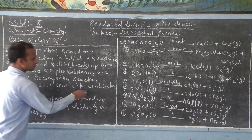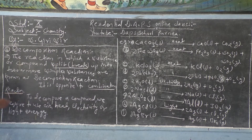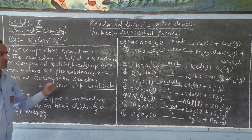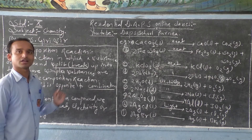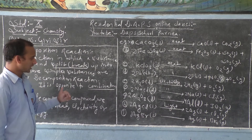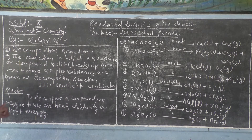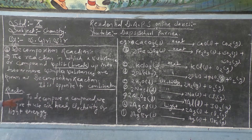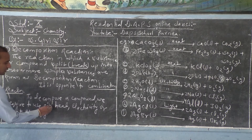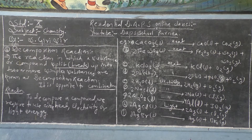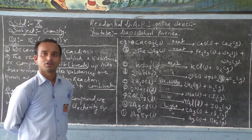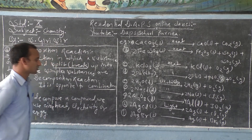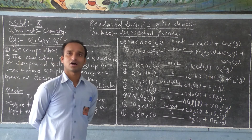Decomposition reactions are opposite to combination reactions. To decompose any compound, we require either heat energy, electrical energy, or light energy. For a decomposition reaction to occur, we need to take the help of some sort of energy — either in the form of heat, light, or electricity.